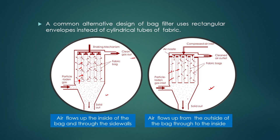After deposition of particles in the bag, they must be separated either by shaking or by another mechanism. When air flows from the outside of the bag, a clean air jet is produced inside the bag through an air nozzle — called a through-air nozzle — so that particles deposited on the outside fall down due to the sudden momentum of the jet. In the first option, the bag is shaken and particles fall downward due to the shaking action.